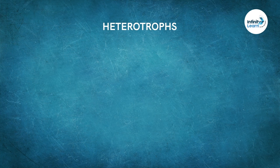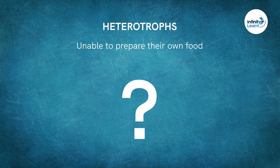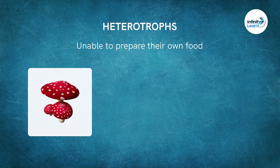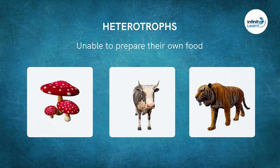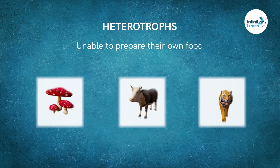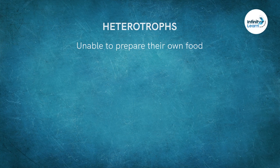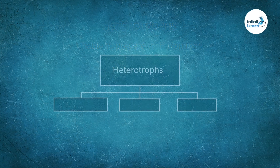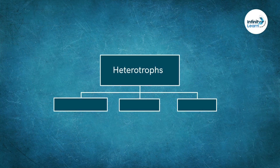Heterotrophs are those which are unable to prepare their own food. Unlike green plants, heterotrophs depend on other living or dead organisms for their food. These can be broadly divided into three major categories based on their food habit.